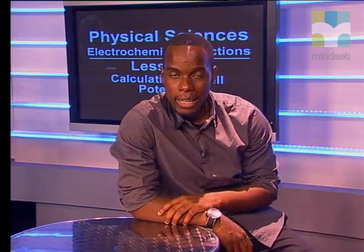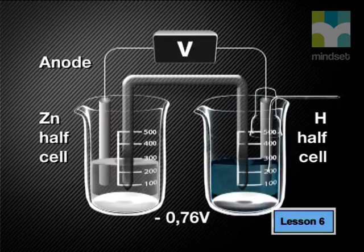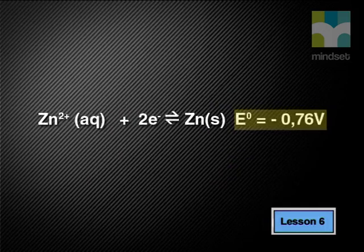At the end of our previous lesson we found that when a standard hydrogen electrode is connected to a standard zinc half cell, the reading on the galvanometer is −0.76. We call this reading the standard electrode potential or E° value of the zinc half cell. It's important to note that the negative E° value tells us that the zinc electrode is a stronger reducing agent than hydrogen gas.